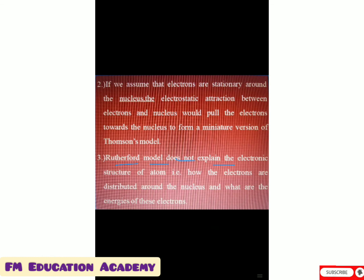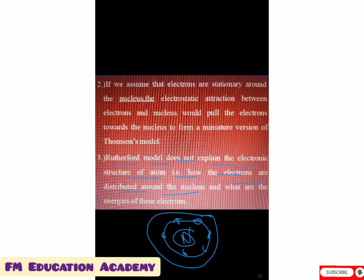Third drawback: Rutherford's model does not explain the electronic structure of the atom — that is, how the electrons are distributed around the nucleus. He says the nucleus is there and electrons revolve around it, but how they are arranged, how they are distributed, and what are the energies of these electrons, is not explained by Rutherford's model.